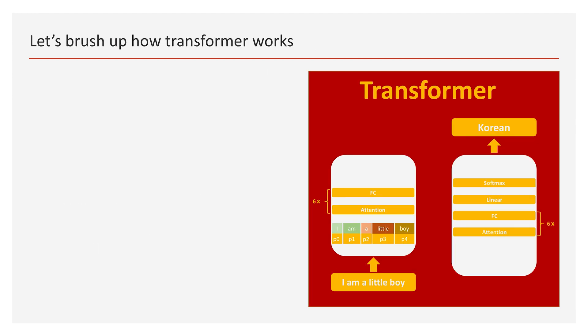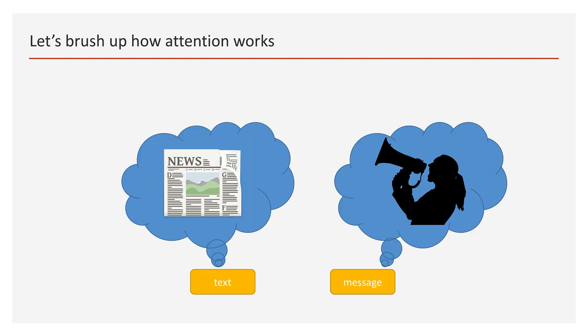Why don't we brush up on how the Transformer is working? Let's start with the bidirectional encoder. When the sentence input comes into the Transformer's bidirectional encoder, every token is combined with positional encoding, and attention vectors get generated at once by matrix calculation. Attention vectors help the model understand each token's semantic meaning by looking at all tokens in the sentence. For example, if you look at only one token, it is ambiguous to say what 'text' means and what 'message' means. 'Text' may mean text in a newspaper, and 'message' may mean a verbal notice from someone.